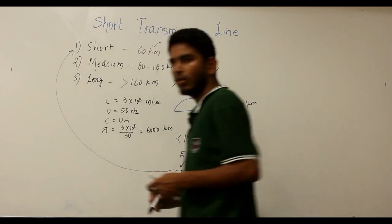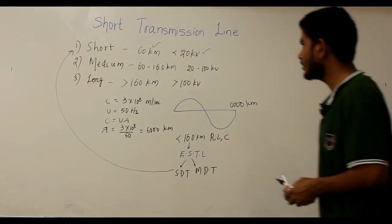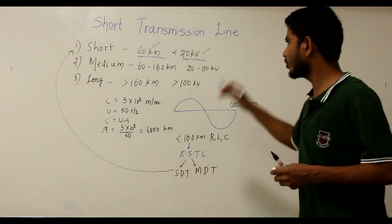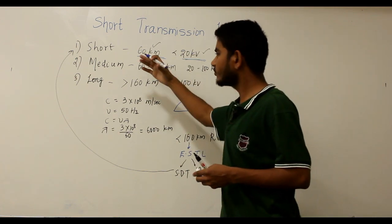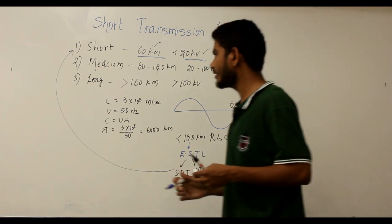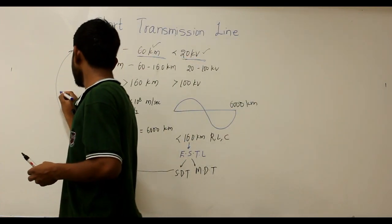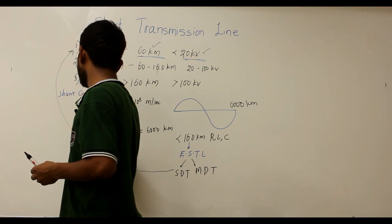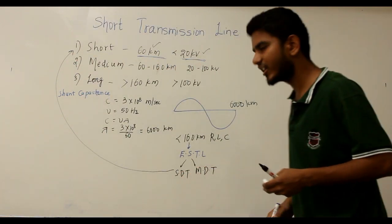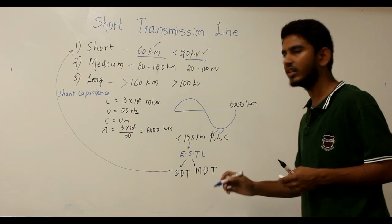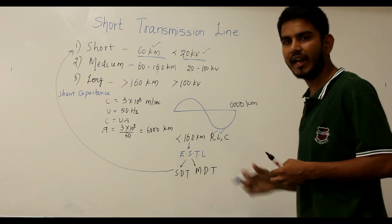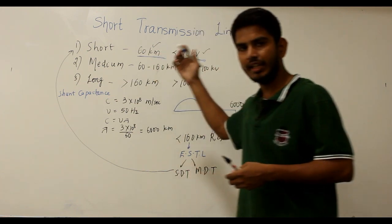Electrically short transmission lines can be further categorized into short distance and medium distance transmission lines. In this video, let us discuss the short distance transmission line. Its line length is up to 60 kilometers and line voltage is 20 kV. Due to the short distance and low voltage, the shunt capacitance is neglected, leaving only R and L as the parameters on which performance depends.